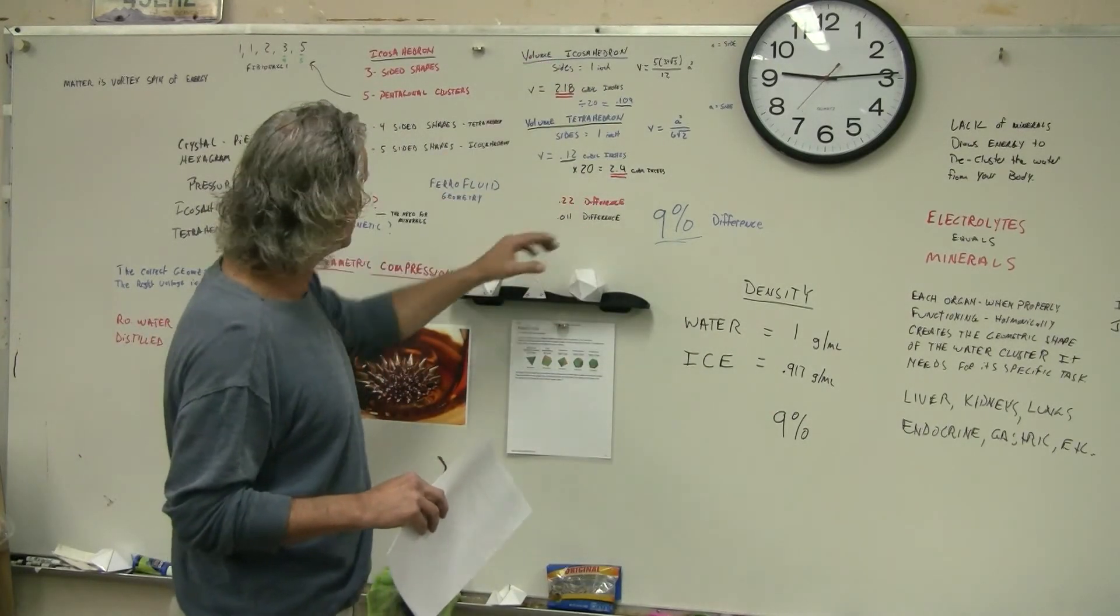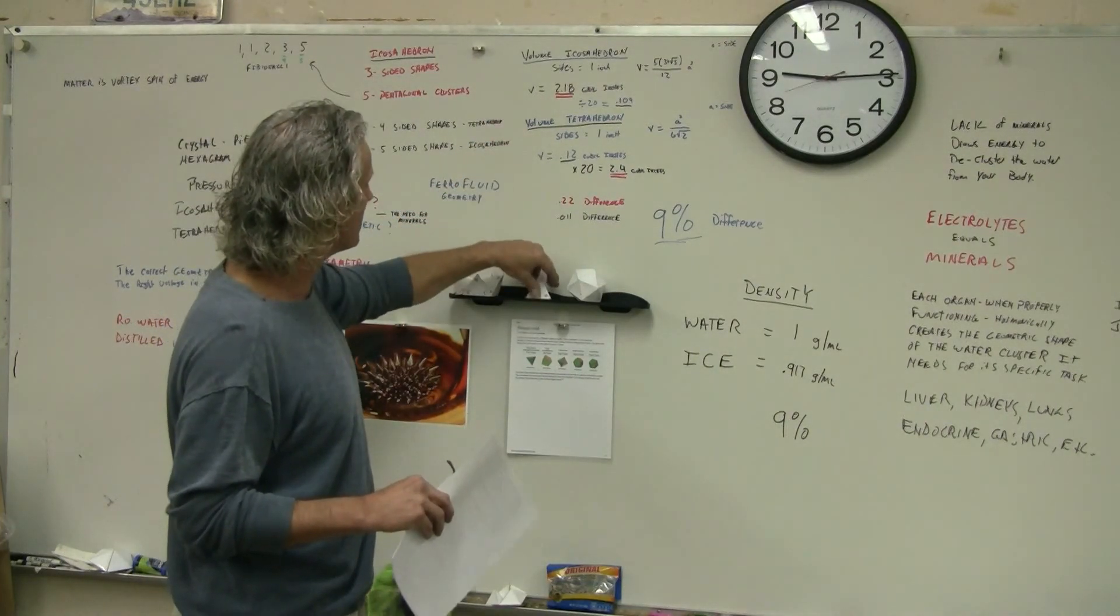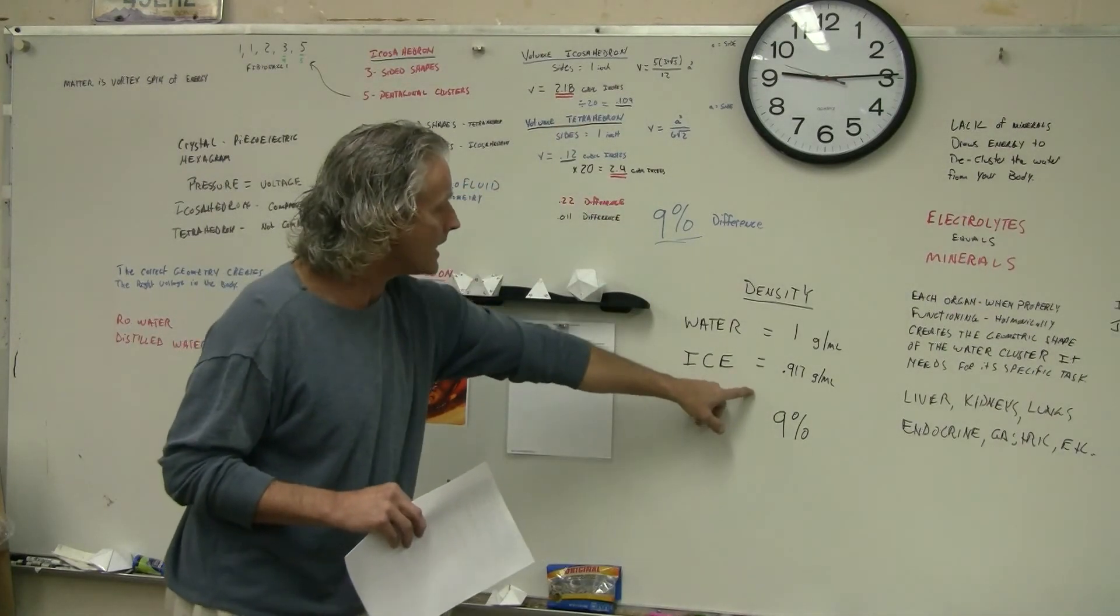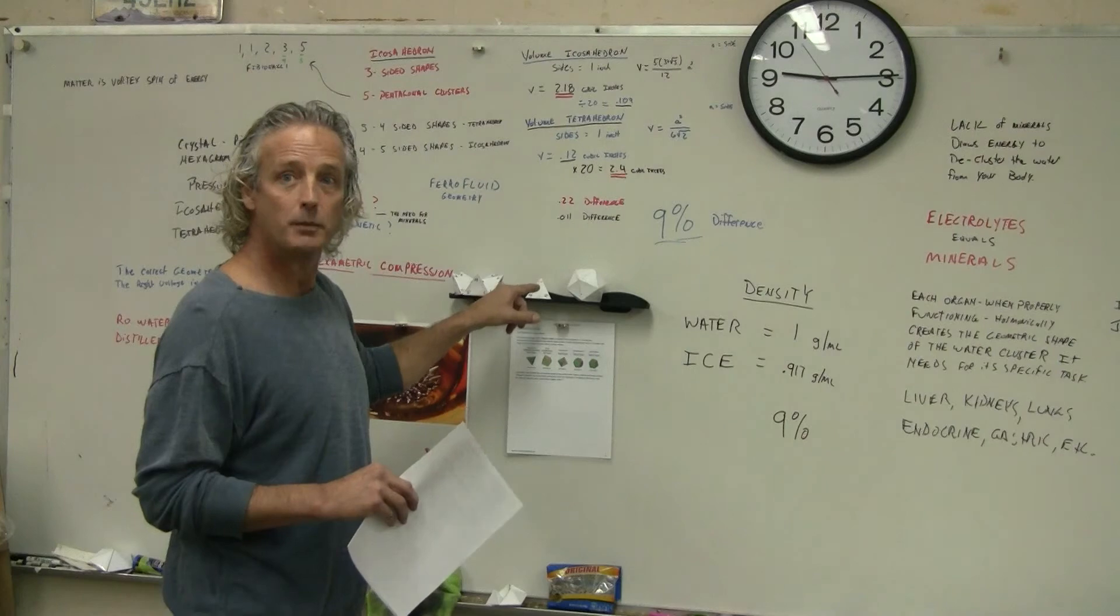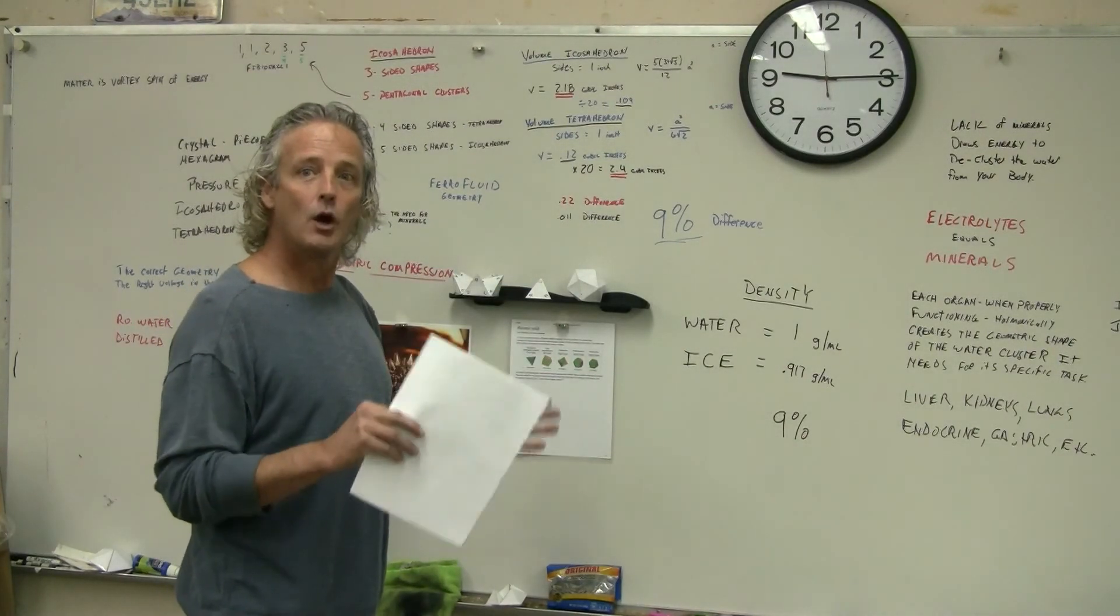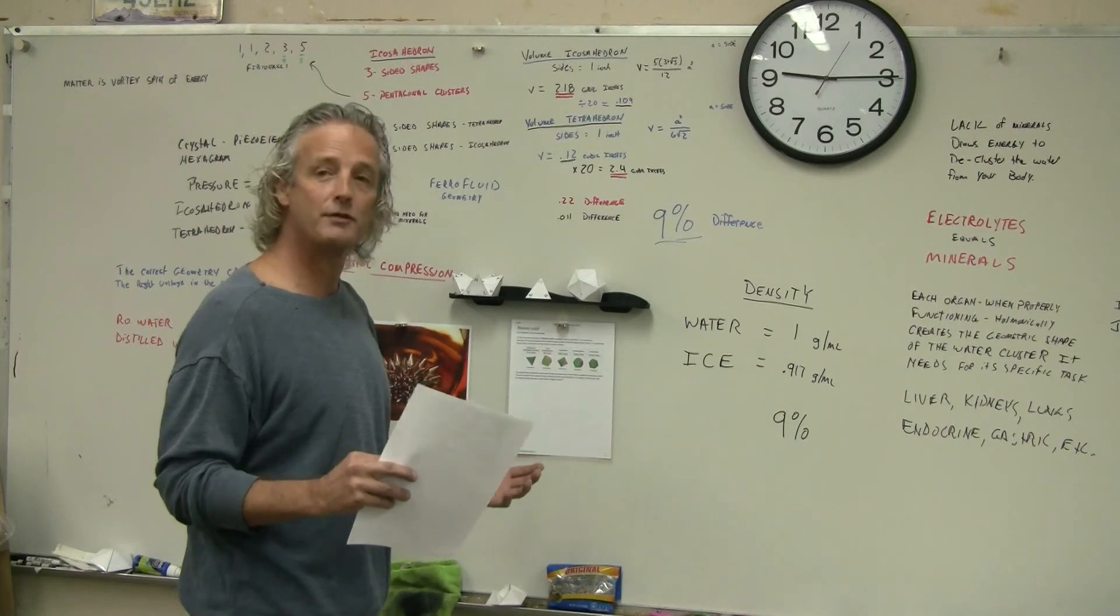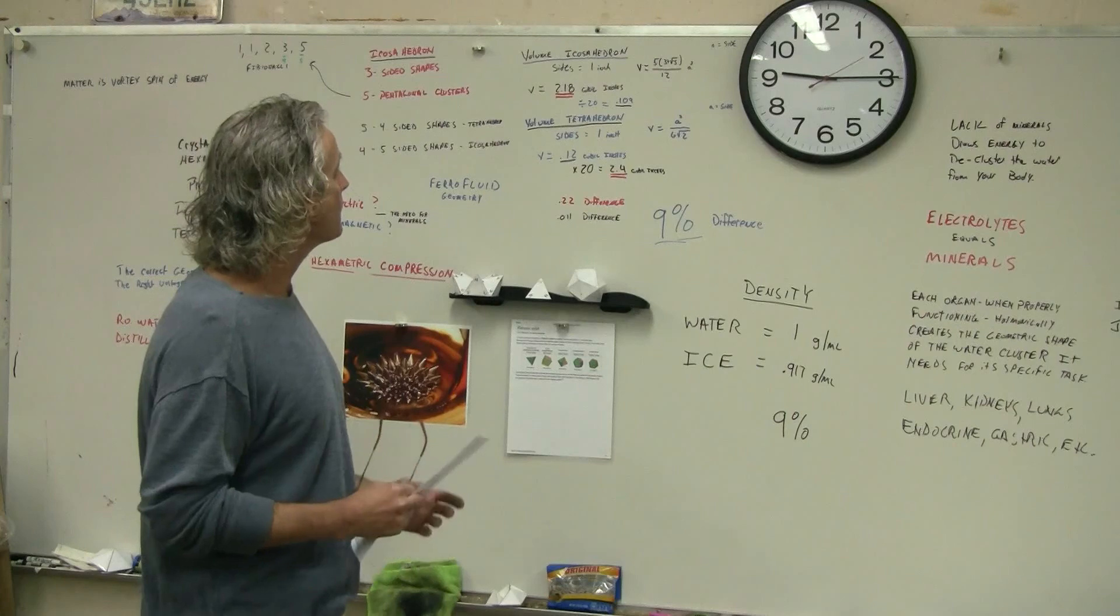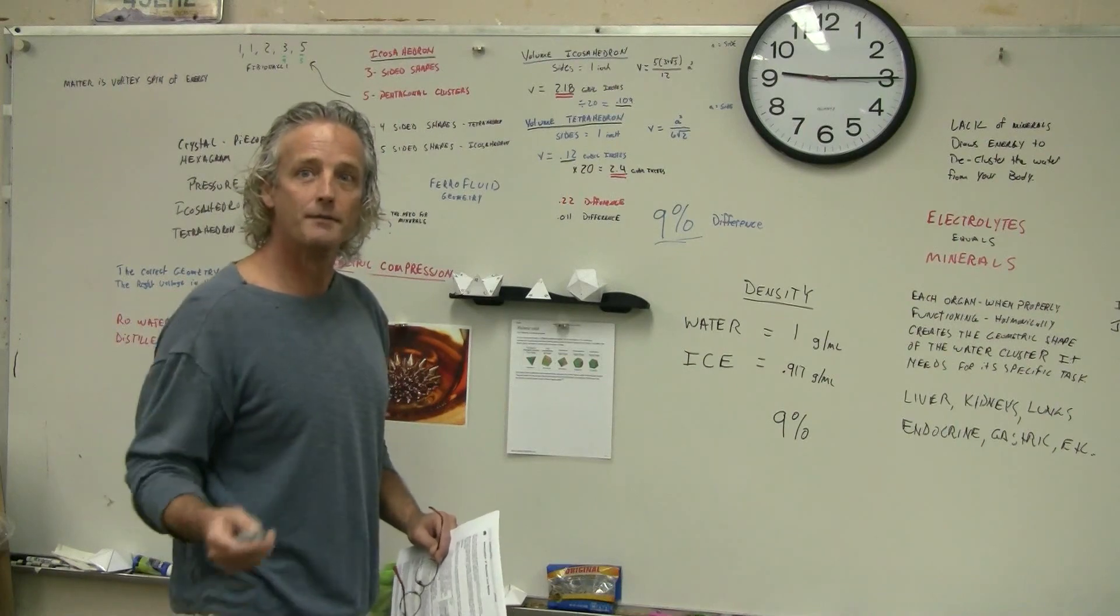The hexametric compression of the icosahedral water structure makes up 20 tetrahedrons, which gives us a volume differential. That volume differential can be seen in ice, and we can see the unpacking. As water freezes, it breaks itself down, but we know that when water freezes, the crystals are hexagonal. What that is showing us is the behind-the-scenes invisible energy that makes up our physical world. That is the hexagon—the hexametric compression. I just wanted to finalize this so I can get on to the importance of minerals in my next video. Thank you for watching.